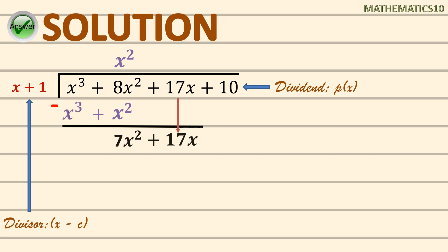Repeat the process by dividing the first term of the dividend. That is 7x² divided by x, which gives 7x. Then multiply: 7x times x + 1 equals 7x² + 7x. Subtract: 7x² minus 7x² is 0, and 17x minus 7x equals 10x. Since there's still a remaining term in our dividend, bring down the next term, which is 10.